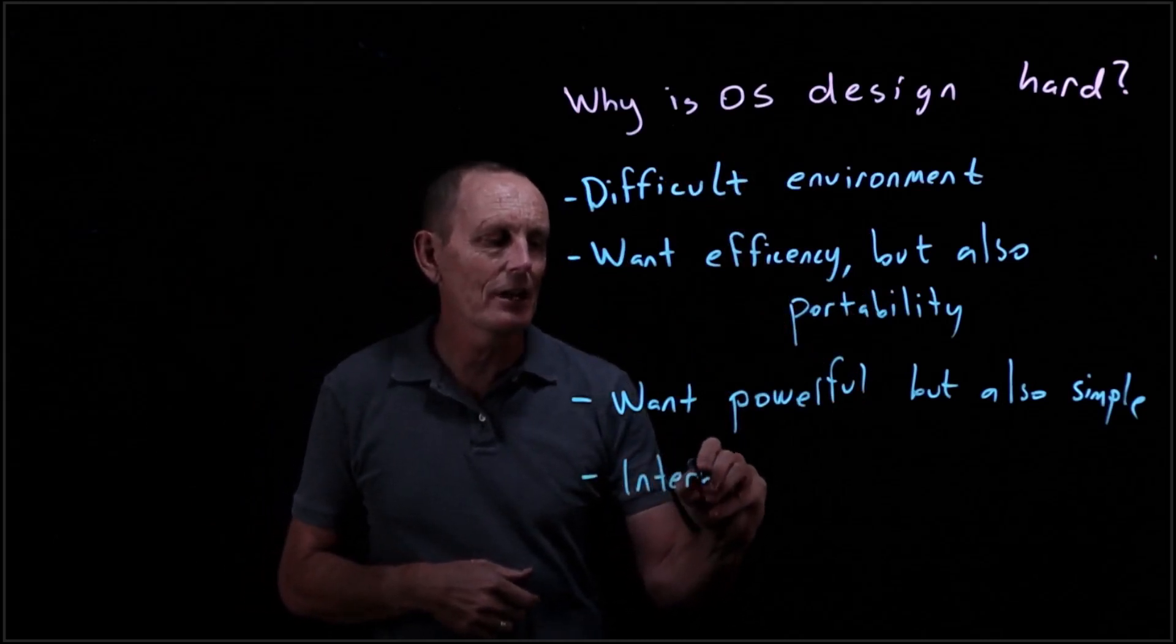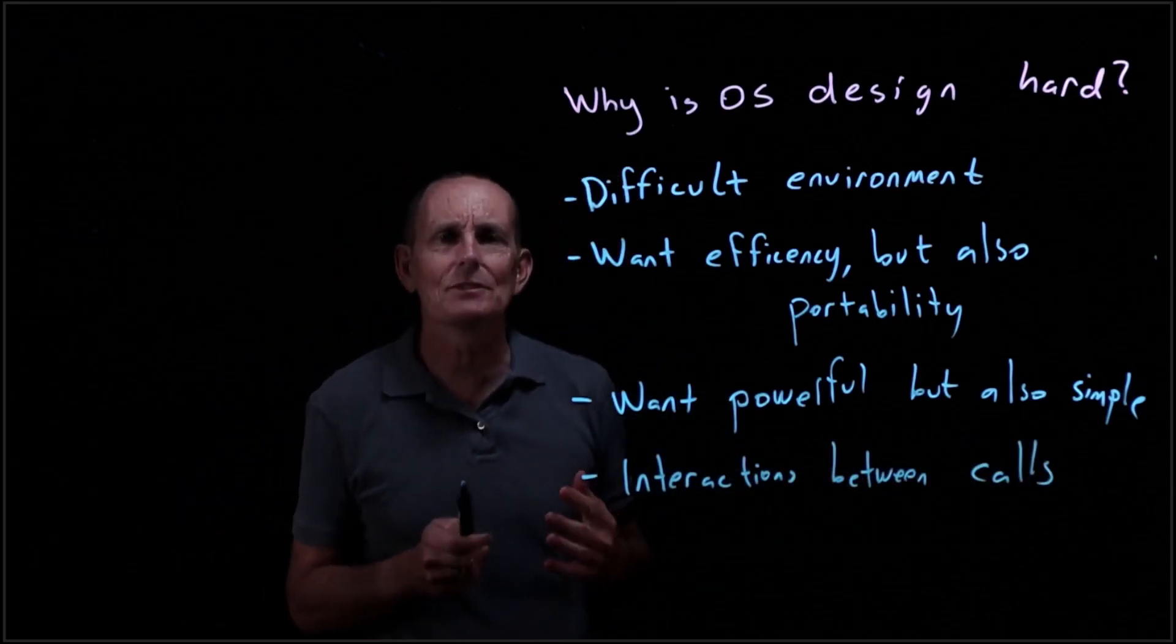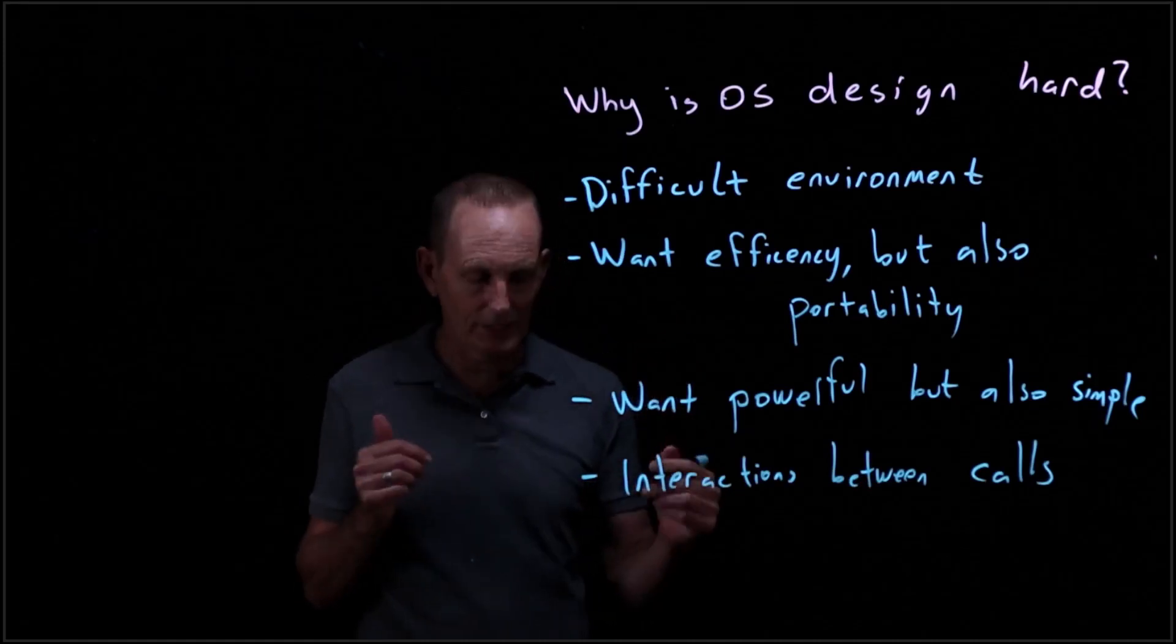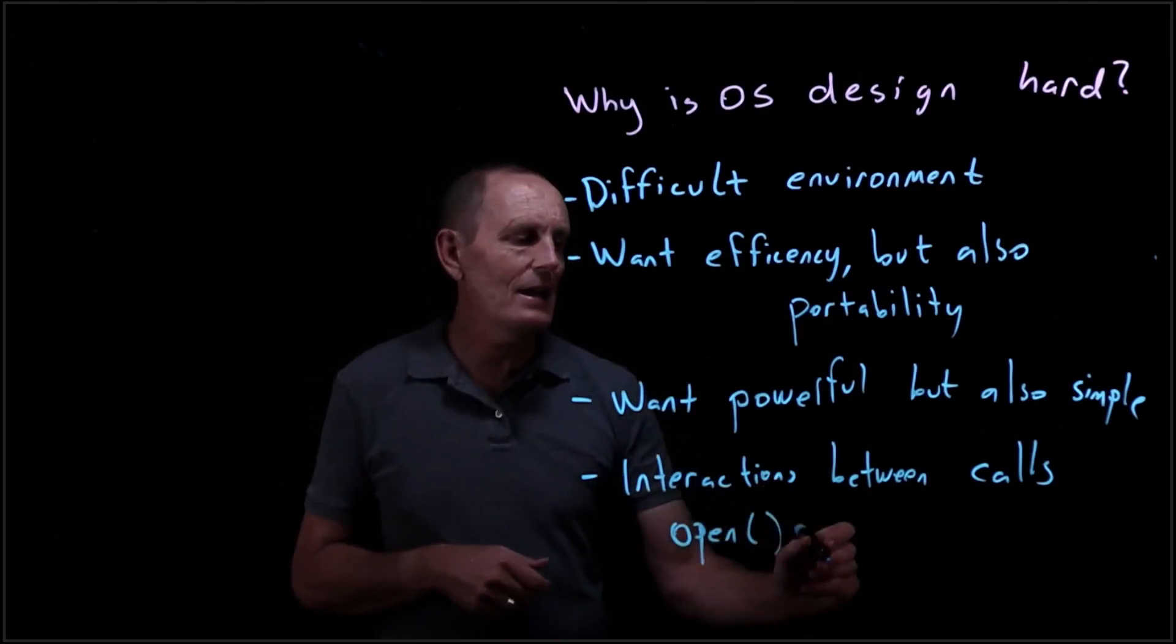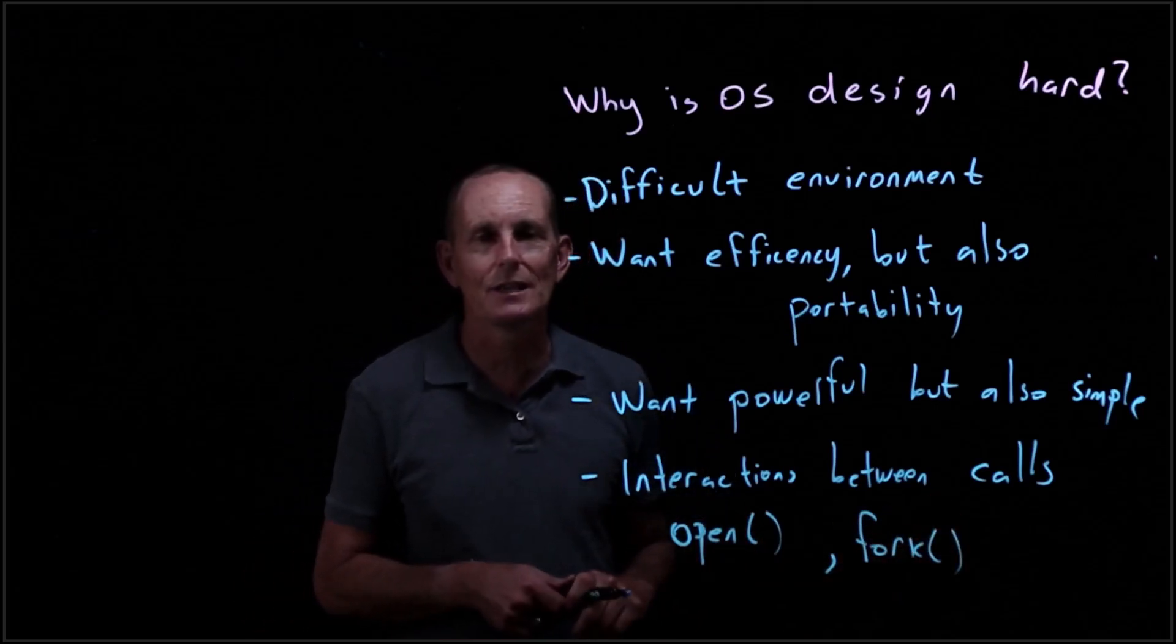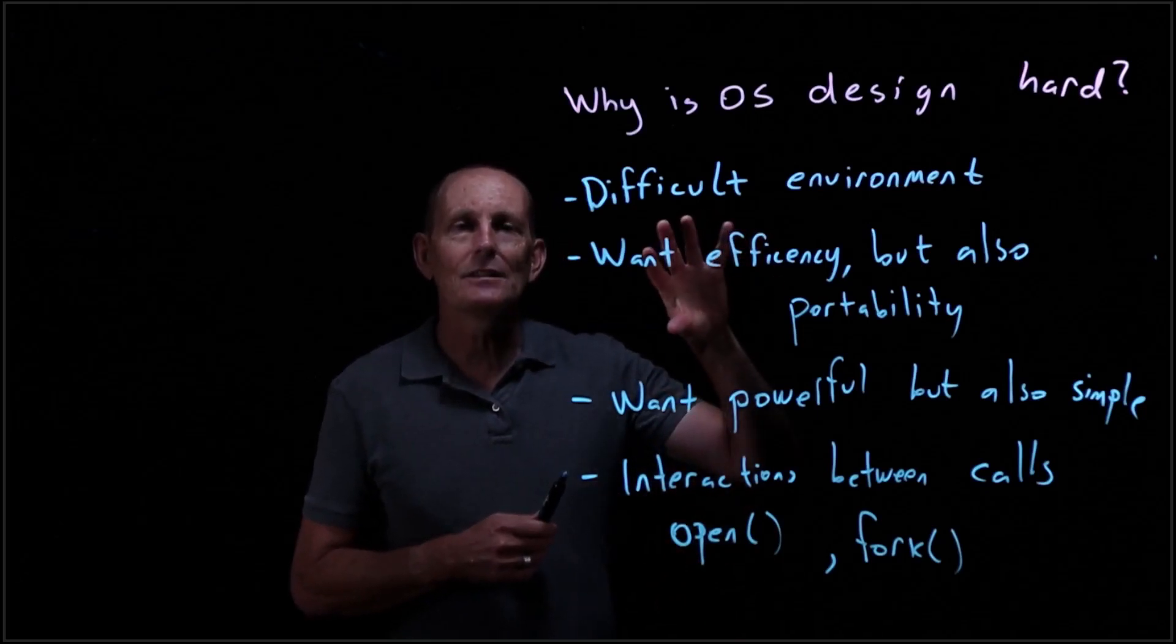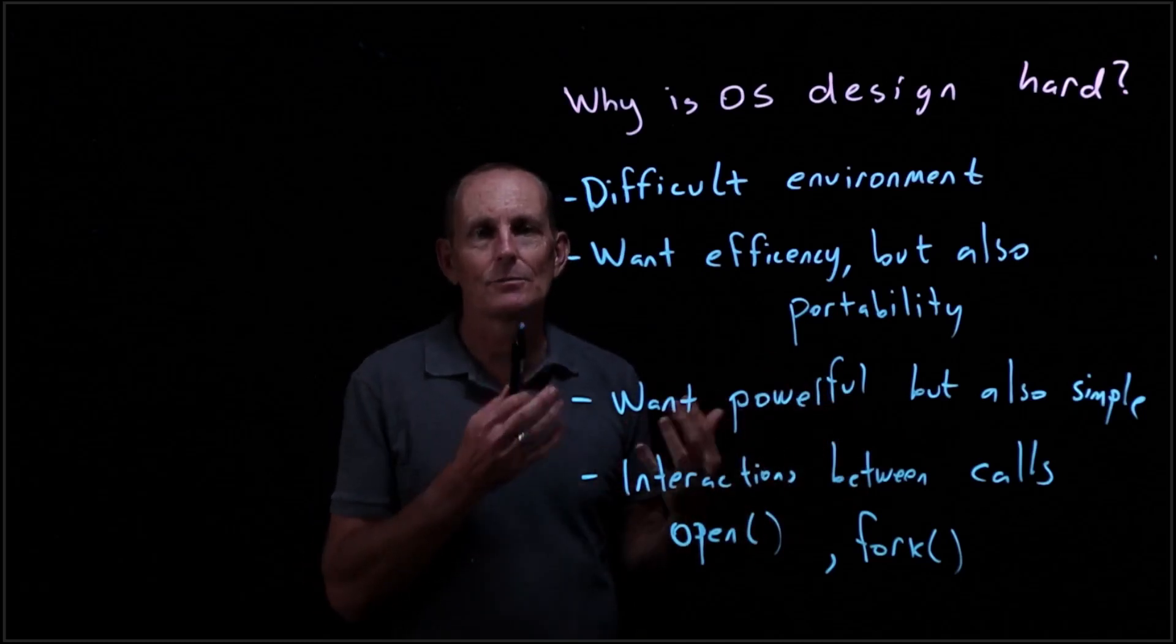And then another difficulty is interactions between calls. These are complicated systems, and oftentimes there are relationships between various system calls that we have to really think about carefully. An example would be, if we look at the open system call, that has an interaction with the fork system call, where fork is used to create a duplicate of a process. What's important there is that it actually shares what are called file descriptors. So if a parent process has some files open and then forks, the child also keeps a copy of those, and so there are some difficulties along with that.